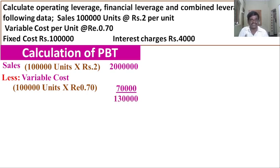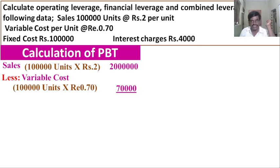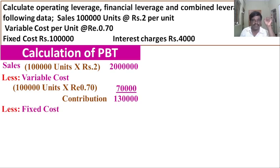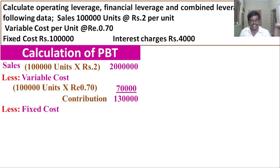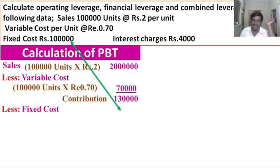After deducting variable cost, the balance is rupees 1,30,000, which is called contribution. From contribution, we deduct fixed cost. Fixed costs are constant at various levels of production and sales volume — there is no change in fixed cost whether sales increase or decrease. The fixed cost given in the problem is rupees one lakh.